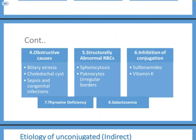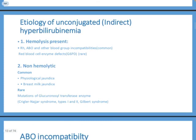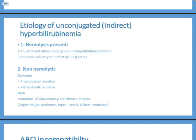Indirect hyperbilirubinemia refers to unconjugated, lipid-soluble bilirubin that can cross the blood-brain barrier and cause kernicterus. Causes include hemolysis (ABO, RH incompatibility, G6PD) and non-hemolytic causes such as physiological jaundice, breastfeeding jaundice, breast milk jaundice, and rare enzyme deficiencies — including glucuronosyl transferase deficiency seen in Crigler-Najjar syndrome and Gilbert syndrome.